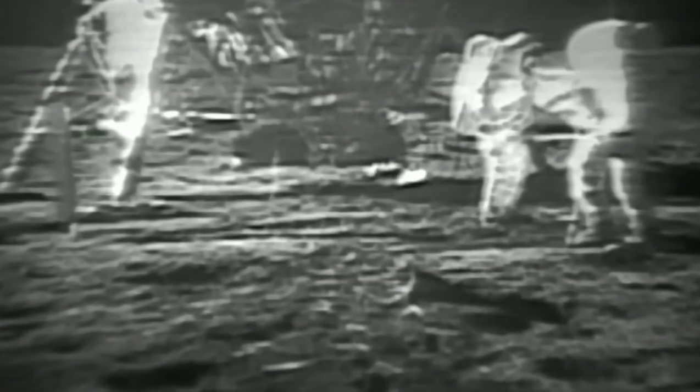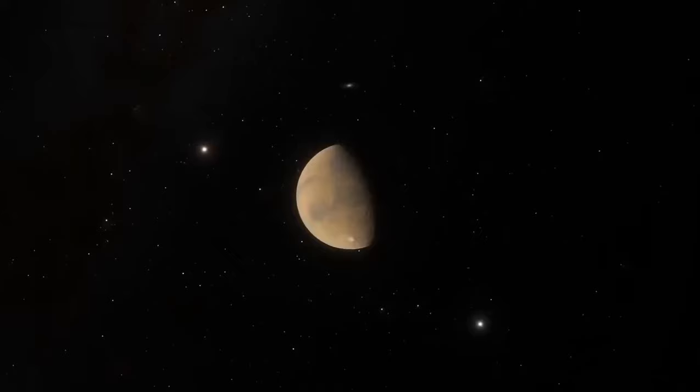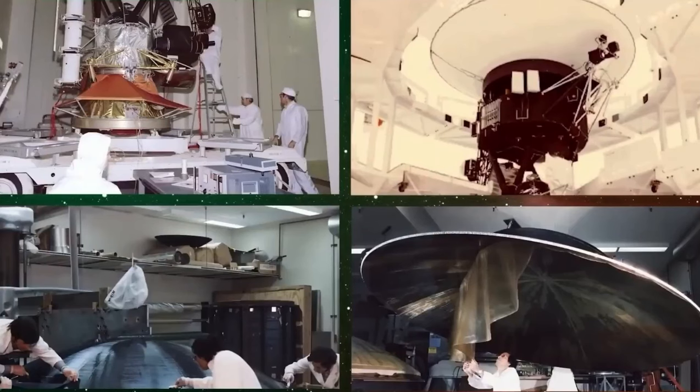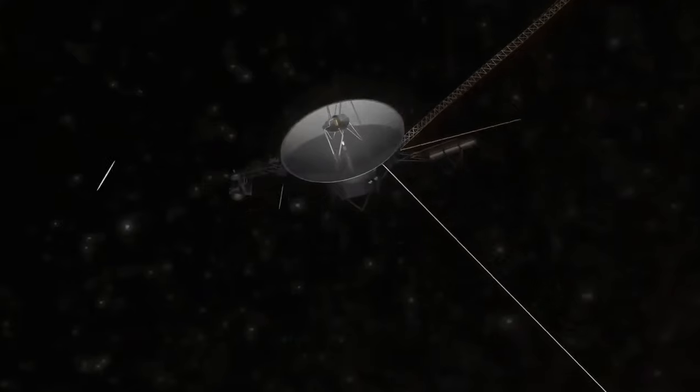The Voyager 1 probe is equipped with detectors specifically designed to measure the density of interstellar dust in deep space. However, communication with Voyager 1 has become more difficult due to limited resources. NASA's global antenna system is expected to have fewer opportunities to receive the mission's signals, resulting in less frequent communication. Despite this, a fascinating discovery recently emerged.